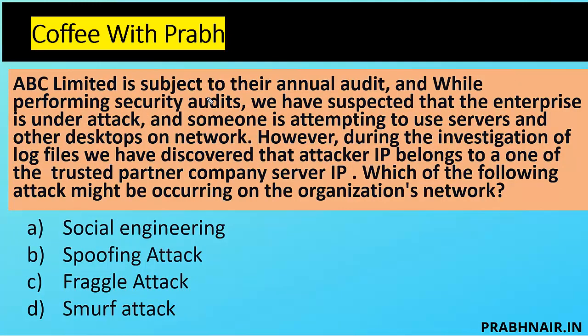ABC Limited is subject to their annual audit. While performing a security audit, it was suspected that the enterprise is under attack and someone is attempting to use servers and desktops on the network. During investigation of log files, it was discovered that the attacker's IP belonged to a trusted partner company's server IP. Social engineering is about information gathering, so that's not the answer. Fraggle and Smurf are DDoS-related. Since only one IP is being targeted and a trusted partner IP is being used, the answer is IP spoofing.